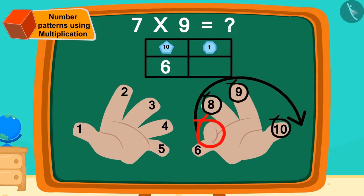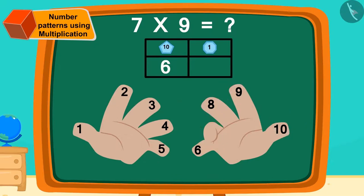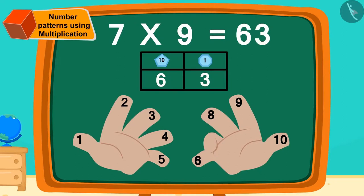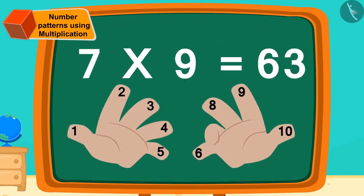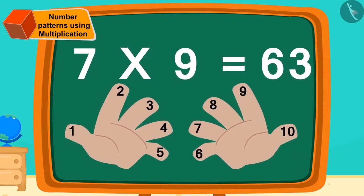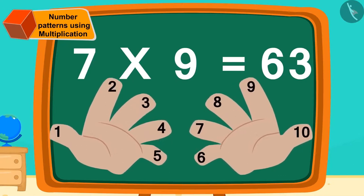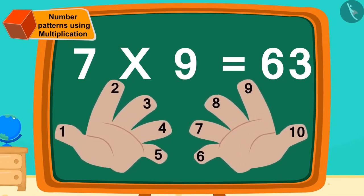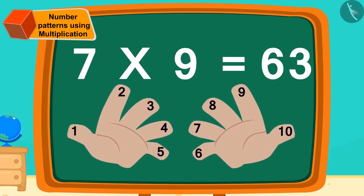Now, how many fingers are there on the right side of the bent finger? 3. We will write this in a ones digit place like this. We found our answer. 7 times 9 equals 63. In this easy way, we can quickly find any multiplication that falls in the nines table. You can also try this method with your friends.